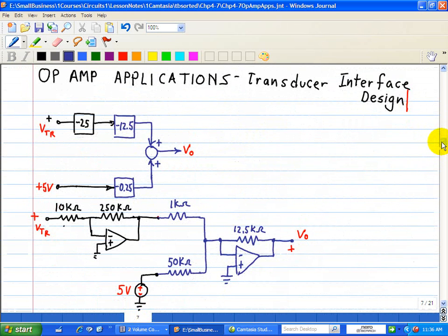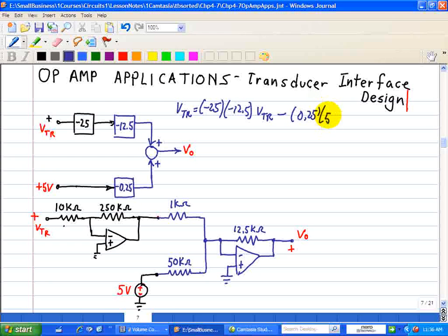We're going to take that expression that we just looked at. VTR is equal to negative 25 times negative 12.5 times VTR, our transducer output voltage, multiplied by 0.25 minus 0.25 times 5. So that's our bias voltage here in terms of a 5 volt reference.